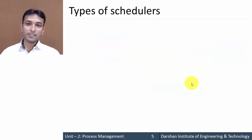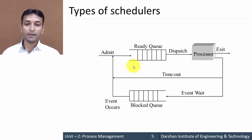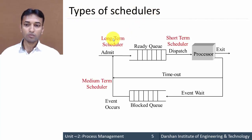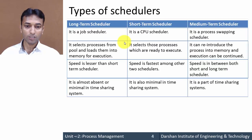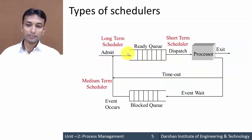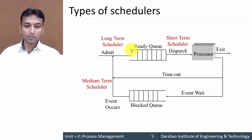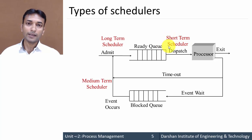Now we will see where these schedulers are placed in the queuing diagram — the process state queue diagram we have already seen. The long-term scheduler is present whenever a process is admitted into the ready queue; it selects a process from the pool and loads it into memory. Once the process is in the ready queue and ready to execute, the short-term scheduler allocates the CPU to that process in the ready queue.